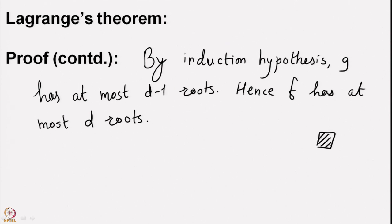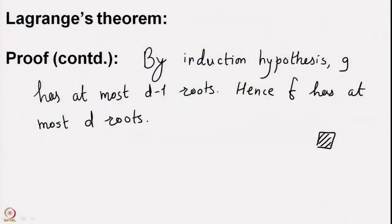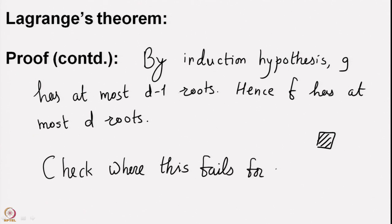You may wonder where this proof fails when you have a composite modulus. The point is exactly that with modulus 8, for instance, we had 4 roots. Eight divides a product of two numbers, but 8 not dividing one factor does not imply it divides the other. Check this as a basic exercise: find where the proof fails for n = 8.